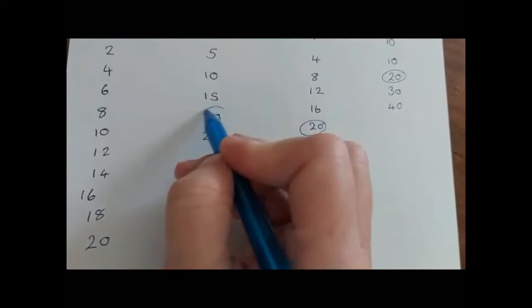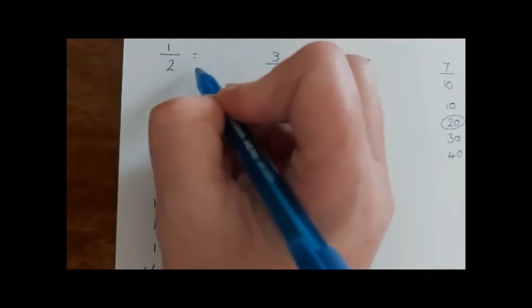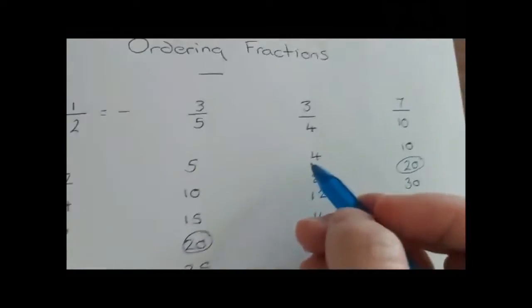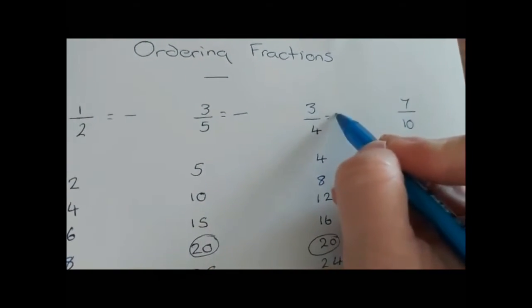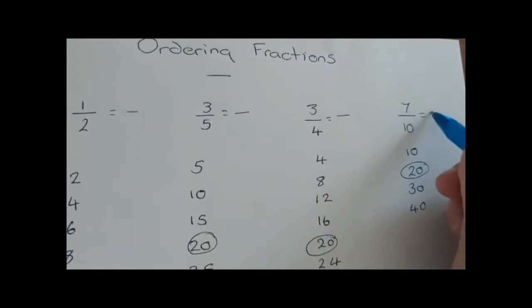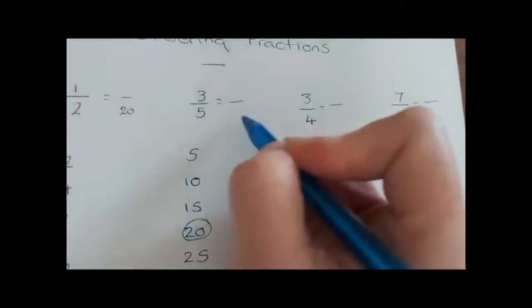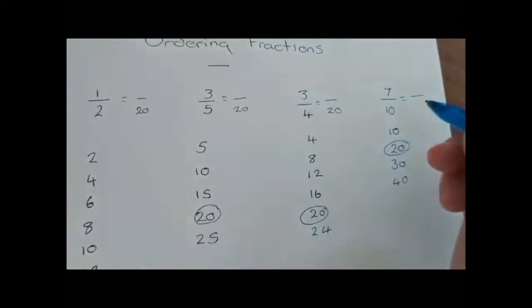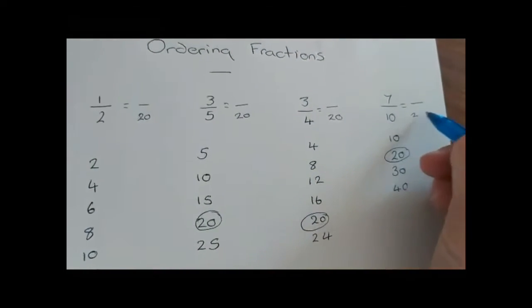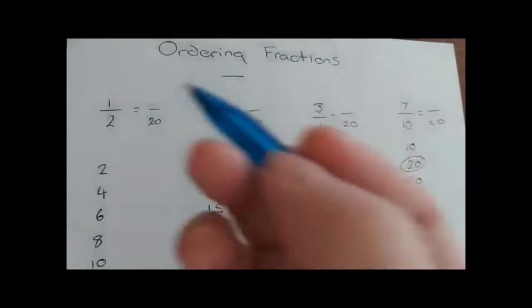Now we're going to write out each of our original fractions but with 20 as our denominator, and we're going to find equivalent fractions. For those of you that can remember with equivalent fractions, our little rule is: what we do to the bottom we do to the top.